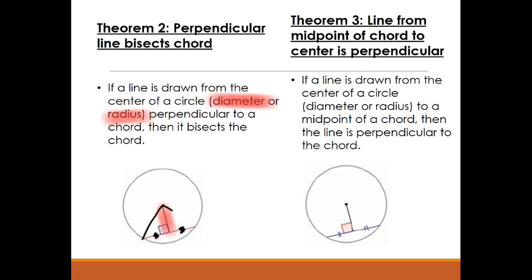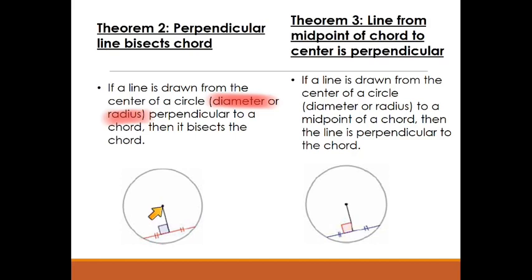Constructing two radii, we know all radii are congruent, this segment is congruent to itself, and we know one angle is a right angle so the other must be too. We have two right triangles congruent by hypotenuse-leg. Since this triangle is congruent to this triangle by hypotenuse-leg, every corresponding part is congruent by CPCTC. Therefore this segment must be congruent to this segment — in other words, this is the midpoint. So if you have a line perpendicular to a chord, that chord gets bisected.